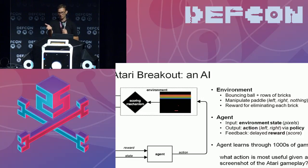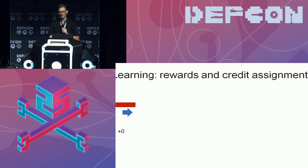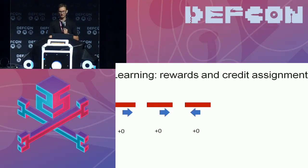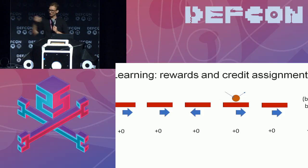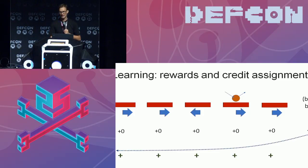After playing thousands and thousands of games, the agent can learn the answer to: what action is most useful given a screenshot from Atari gameplay? You can actually download an AI for Atari from OpenAI that will be better than you at Atari Breakout. The key concept of reinforcement learning here is delayed reward — when I move my paddle right there's no immediate reward, but eventually that ball breaks a brick and I get a point. None of those individual moves were useful in isolation, but because I got an eventual reward, I distribute credit to that sequence of actions as having provided useful benefit. This same concept we're going to use to break next-gen AV.